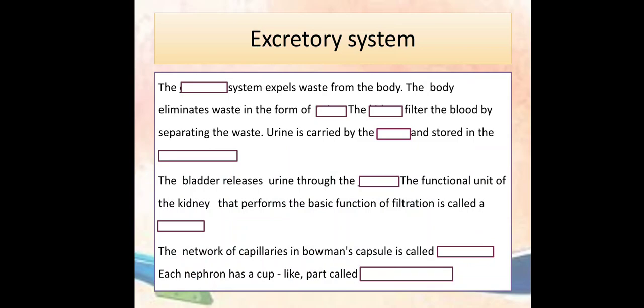The passage is: The dash system expels waste from the body. The body eliminates waste in the form of dash. The dash filters the blood by separating the waste. Urine is carried by the dash and stored in the dash. The bladder releases urine through the dash. The functional unit of the kidney that performs the basic function of filtration is called a dash. The network of capillaries in woman's capsule is called dash. Each nephron has a cup-like part called dash.